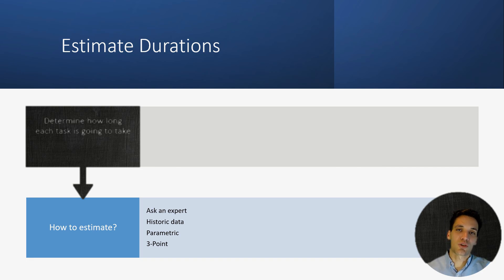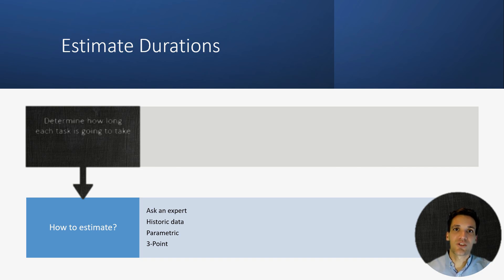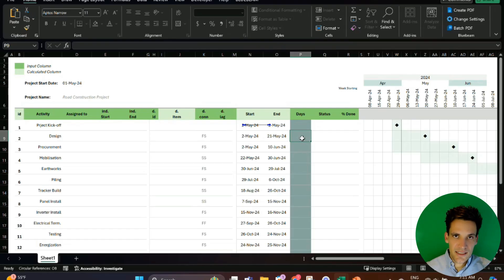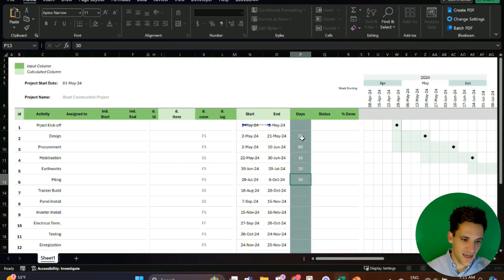The final approach is three-point estimating, where we estimate the duration of a task based on three separate estimates — a worst-case, a normal case, and a best case — and take a weighted average of the three. There are lots of different ways to do it, but ultimately the purpose of this step is to make an accurate estimate of the task duration. The next step is to go through and enter each of these individual durations in the Gantt chart — put in the duration in days that you think each task is going to take.